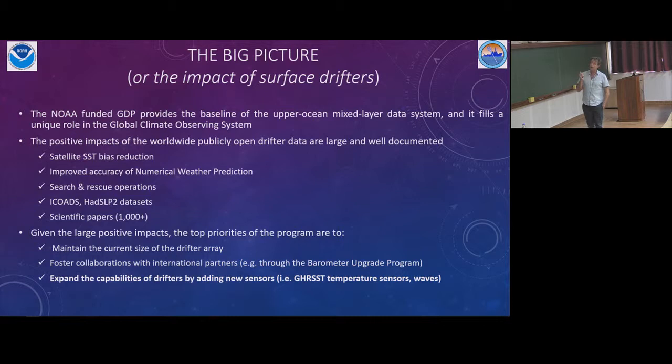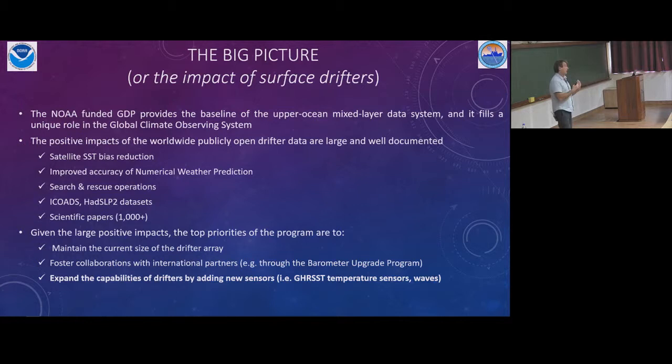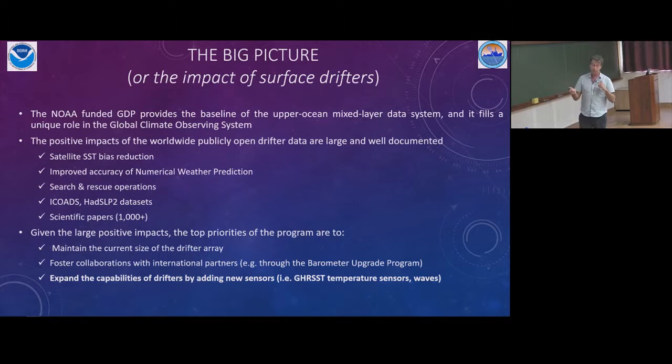Why do we do drifting buoys? This is a summary of the big picture of why drifter data are important. By drifter — it's not Argo, it's drifting buoys, surface stuff. There are three main big areas where we have a big impact. The first one is SST in-situ measurements, which reflects into calibration and validation of satellite products. The drifters provide the baseline of observations through which satellite observations are validated — mainly validated, not calibrated.